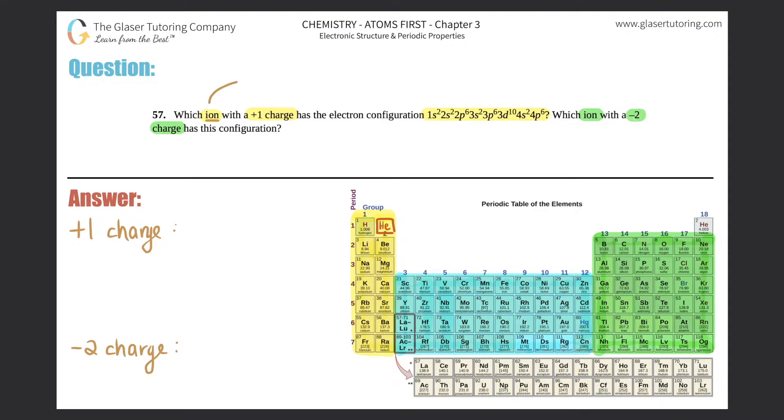First things first: they're ions, which means they're charged, so their electrons are different from their protons. This one has a plus one charge and the second one we have to figure out is a negative two charge.